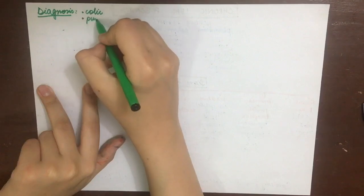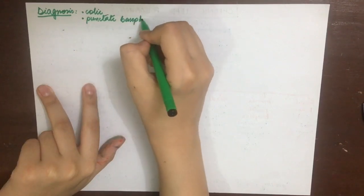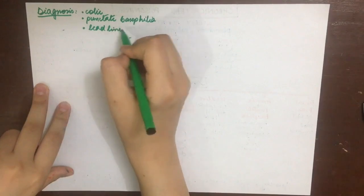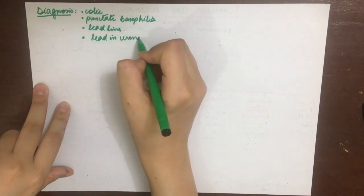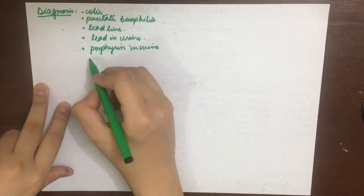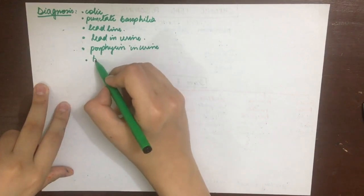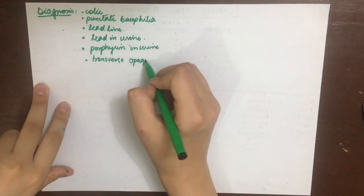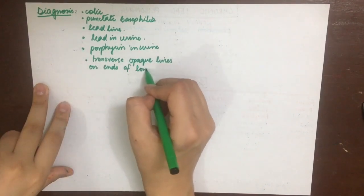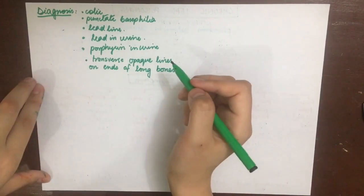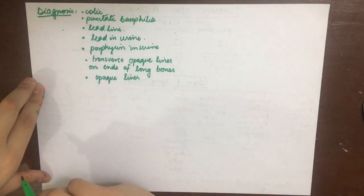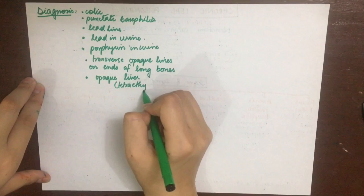To diagnose a patient of chronic lead poisoning clinically, look for colic, punctate basophilia, the blue-black line on gums, encephalopathy and palsy, lead and porphyrins in the urine, transverse opaque bands on long bone ends on X-ray, and the liver appearing opaque, mainly in tetra ethyl lead poisoning.